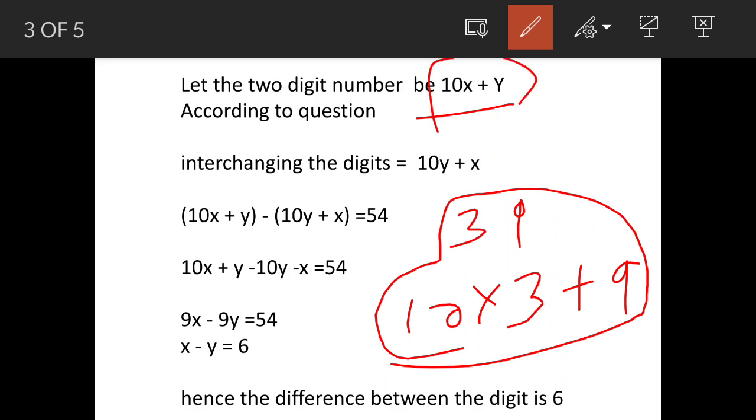First, the number is 10x plus y, and when we reverse the digits it becomes 10y plus x, and the difference is given as 54. When we subtract these two numbers and simplify, 9x minus 9y equals 54, and when you further simplify you get x minus y equals 6.